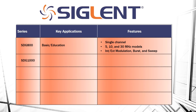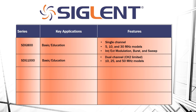Next up, the SDG 1000 series — really an extension of the SDG 800 series, again focusing more on basic function generation and education. Here we've got a dual channel unit, although channel 2 is slightly limited in its voltage and arbitrary waveform capabilities, so you want to check the specifications to make sure that channel 2 is going to work for your applications. It has 10, 25, and 50 MHz models available, and also has similar internal and external modulation, burst, and sweep capabilities.